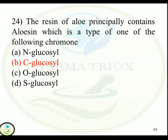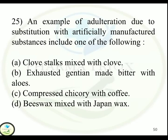Question 25: An example of adulteration due to substitution with artificially manufactured substances includes — Option A: Clove stalks mixed with clove. Option B: Exhausted gentian made bitter with aloes. Option C: Compressed chicory with coffee. Option D: Beeswax mixed with Japan wax. Correct answer is Option C — compressed chicory with coffee.